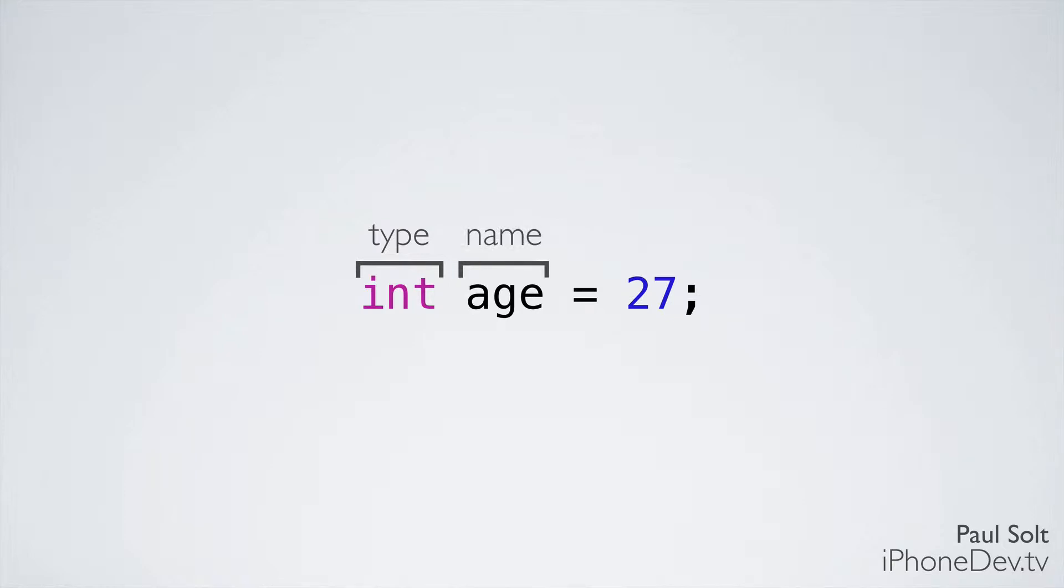Next, we have the name or alias. This is what we're going to call our variable. We generally want our variable names to be human readable and informative. When I read your code and see that you've created a variable, the name needs to make sense and convey what kind of information you're storing.